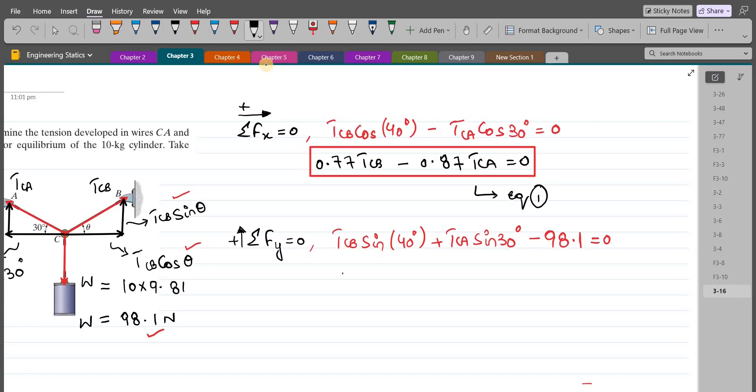So from here, we have 0.64 TCB plus 0.5 TCA equals 98.1. Let's call this equation two.